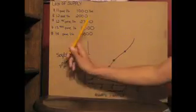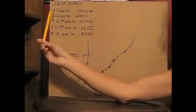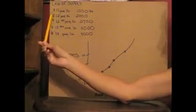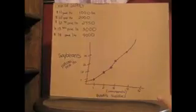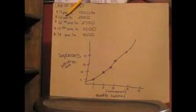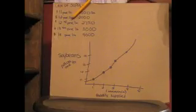I start here with my price of soybeans per pound at $11. At $11, I'm willing to supply 1,000 pounds. At $12 per pound, I'm willing to supply 2,000 pounds of soybeans. When the price goes to $12.75 per pound, I'm willing to supply 2,750 pounds of soybeans.